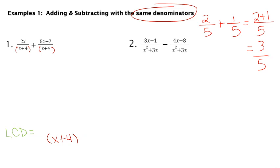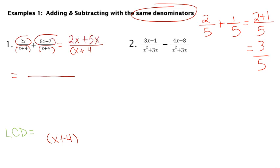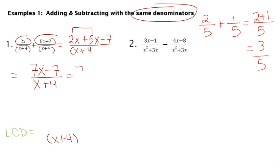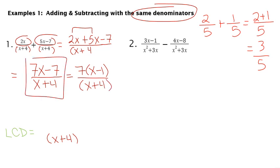So when we look at this problem, I know I'm going to have x plus 4 on the bottom, and I'm really just going to add what's on the top. So I have 2x plus 5x minus 7. When I combine my like terms, I have x plus 4 on the bottom still, and 2x plus 5x is 7x. If we factor it further, we'd see there are no common factors on the top and the bottom. So we can leave our answer as 7x minus 7 over x plus 4.